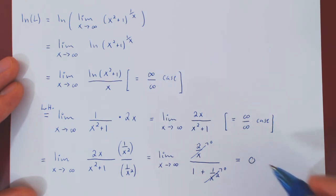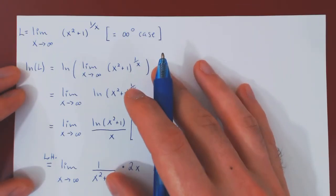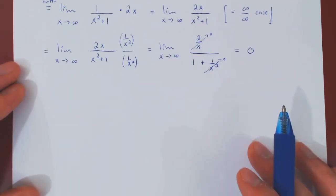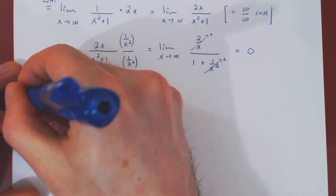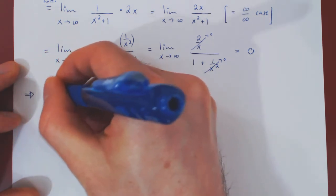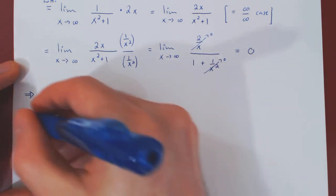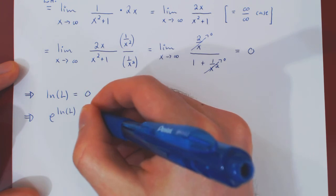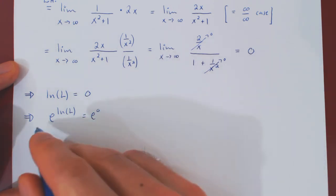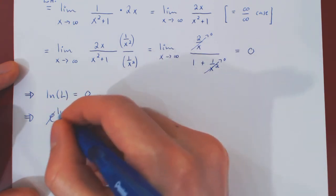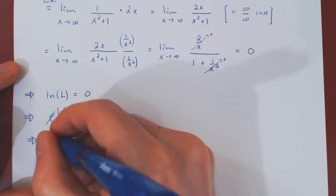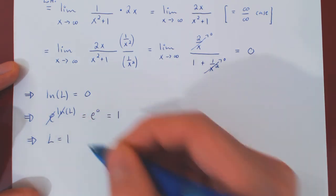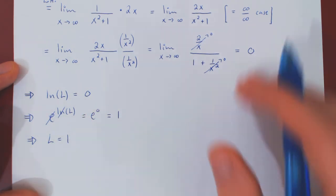So we have the answer, but of course don't forget, not to the original limit, but to the ln of the original limit. So the ln of L is equal to 0. To isolate L, we raise both sides with E, so E to the ln of L equals E to the 0. E being the inverse of ln, they cancel each other out. Therefore, L is E to the 0, but E to the 0 is simply 1. So in this case, the limit is equal to 1.